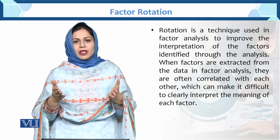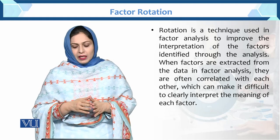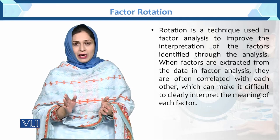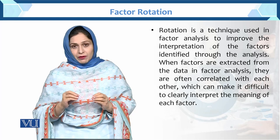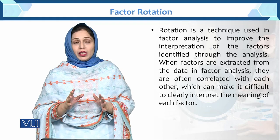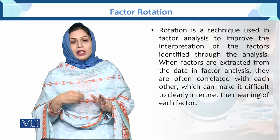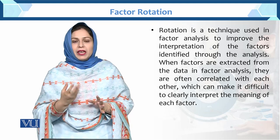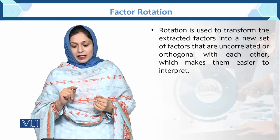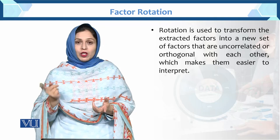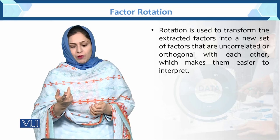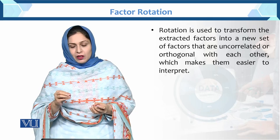हमने factors तो extract करनी हैं data analysis से. They are often correlated with each other - as we know कि correlation होनी चाहिए between factors and the variables - which can make it difficult to clearly interpret the meaning of each factor. Correlation तो है उसके between लेकिन interpretation नहीं बन रही, हम उसको explain नहीं कर सकते. इसके लिए rotation is used to transform the extracted factors into a new set of factors.